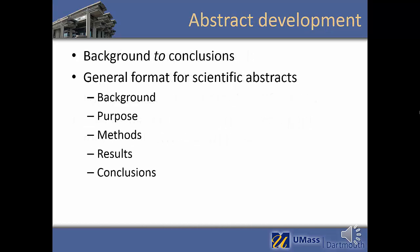Abstract development, from background to conclusions: typically when you write an abstract, you want to describe your study from the beginning — why you did it, what you did — through to the end — what you found, what your conclusions were. The general format we see for scientific abstracts tends to include these common headings: background, purpose, methods, results, and conclusions. I'll talk more about what we include in each of those sections.